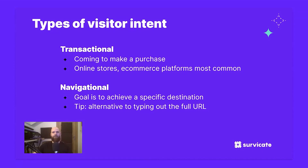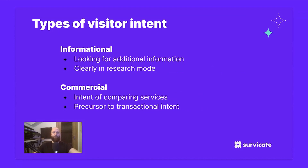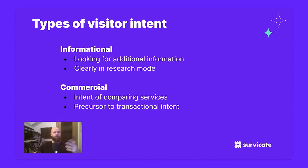Navigational intent is essentially an alternative to typing out the full URL. Next is informational intent, where the visitor wants additional information or answers to a specific question — they're in research mode, like people visiting news websites or Wikipedia. The last one is commercial intent, where the visitor is comparing services to decide which to purchase. It's often considered the precursor to transactional intent — the user is close to pulling the trigger but needs more guidance.